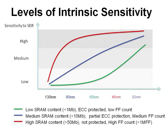Here is a qualitative assessment for the intrinsic sensitivity of your design, regardless of the environment. According to the size of the embedded memory and the flip-flop count in your ASIC design, mitigation action should be taken as early as the 130nm node. This is the case for high SRAM content — typically more than 15 Mbit — high flip-flop content of more than 1 million flip-flops, and no protection or mitigation. At the other end of the spectrum, you might not feel the risk until moving into 45nm, especially if your embedded memories are already ECC protected.